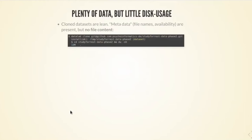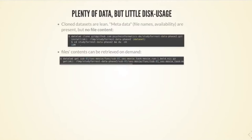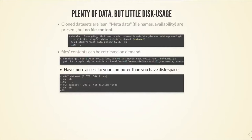The dataset you clone is very lean and fast to install. There is something you can simplify as metadata — file names and an internal record of where they are available from — but not the file content that belongs to those files. This dataset I've just cloned, if I look at how much space it takes up on my system, it's just a fraction of the actual file contents — just 18 megabytes instead of maybe 60 gigabytes.